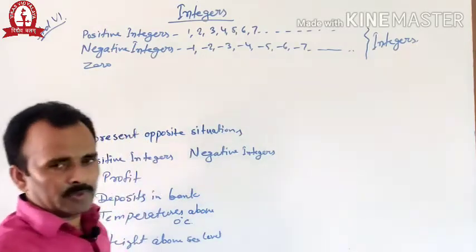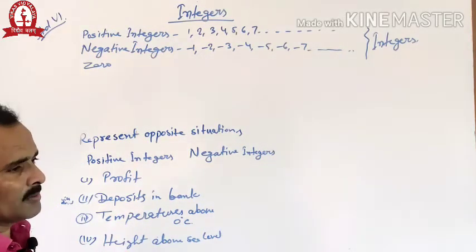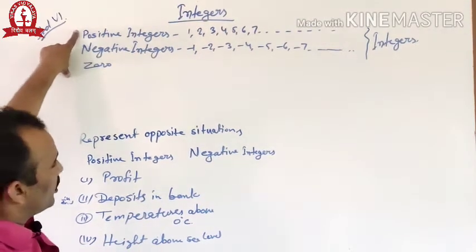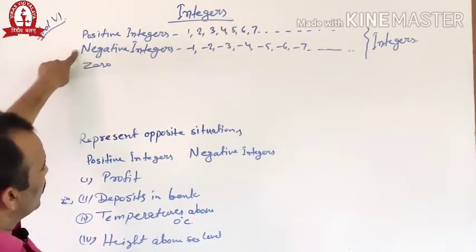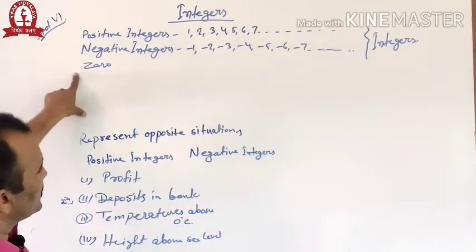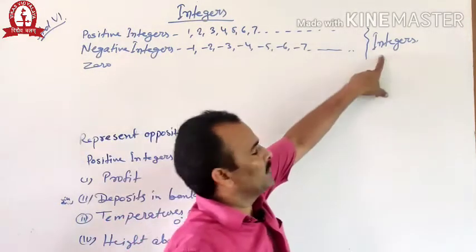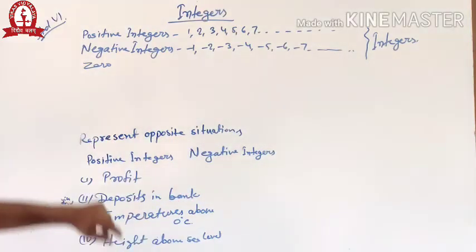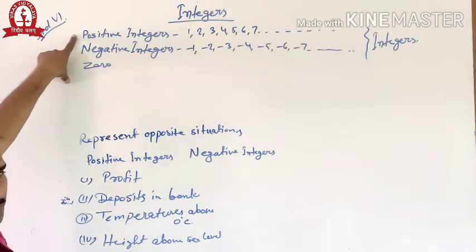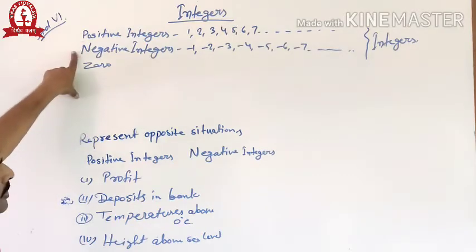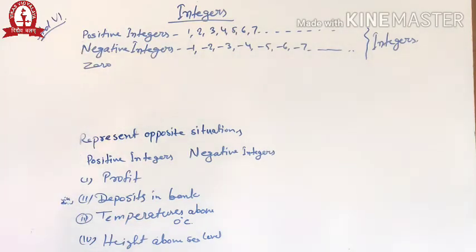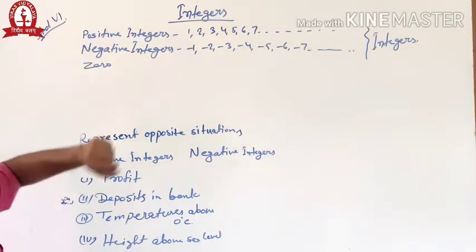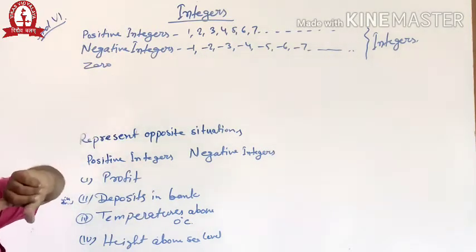Together, all the positive integers, all the negative integers, and zero are called integers. So we divide integers into three groups: first, all the positive integers; second, all the negative integers; and third, zero.